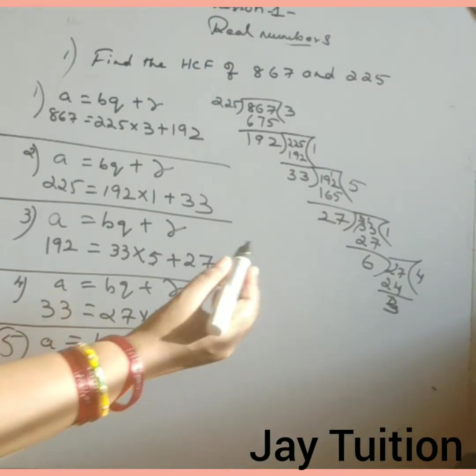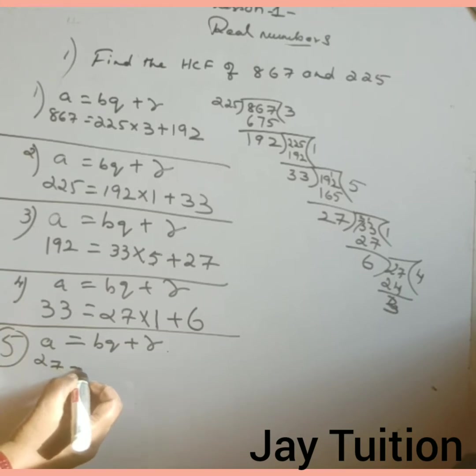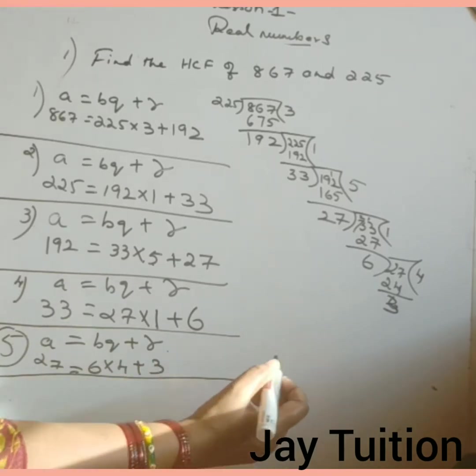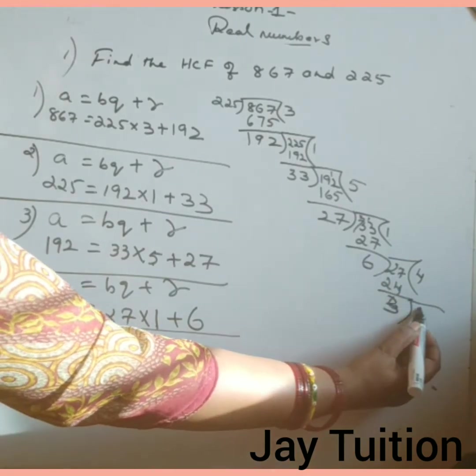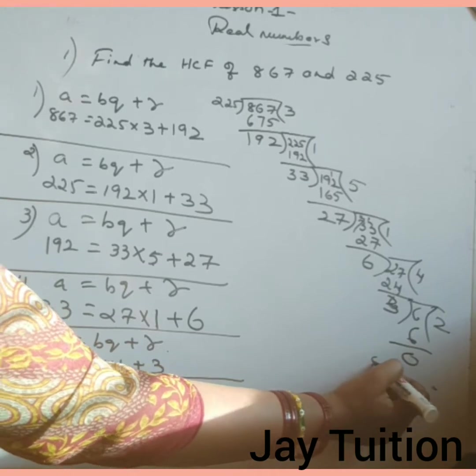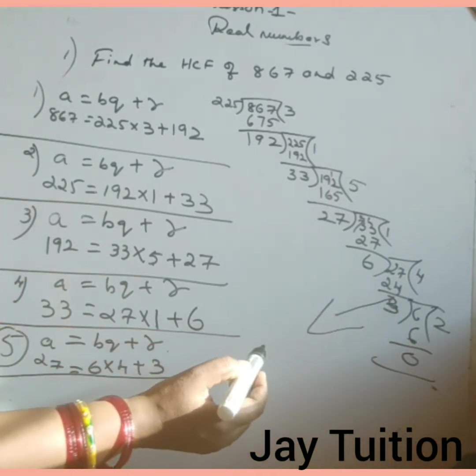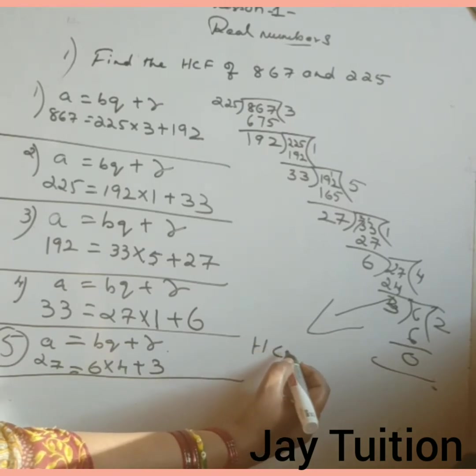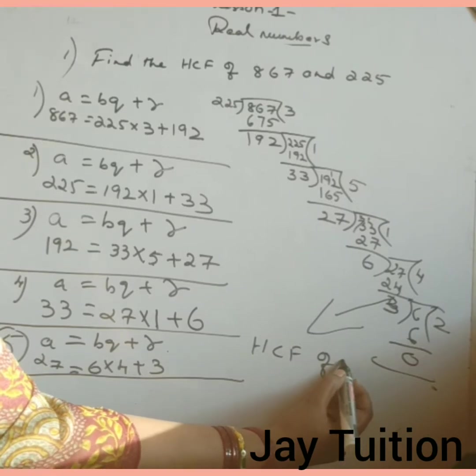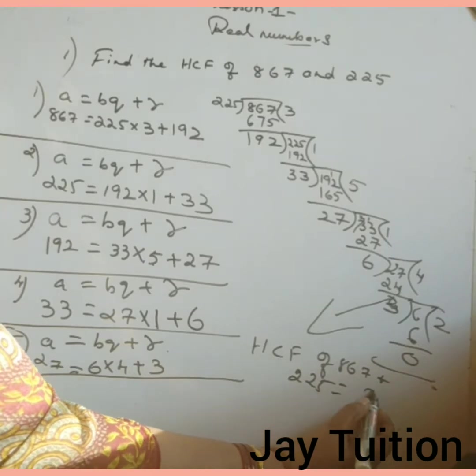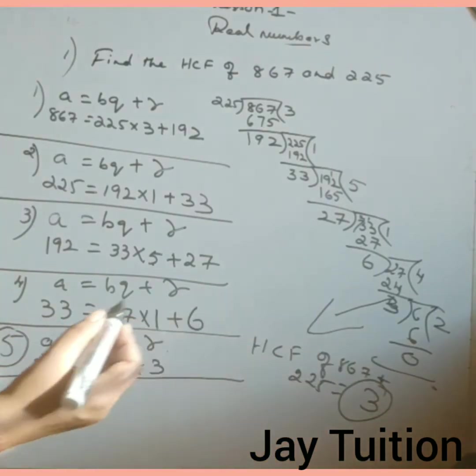A equals to BQ plus R. A is 27 equals to 6 into 4 plus 3. You will get this answer. One more step: 6 divided by 3, 2 times 6. Remainder is 0. So 3 is HCF. HCF of 867 and 225 is 3.